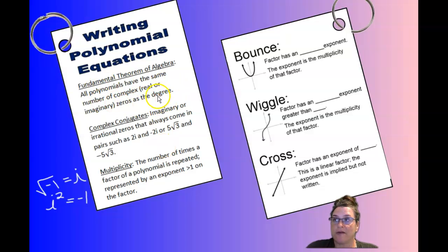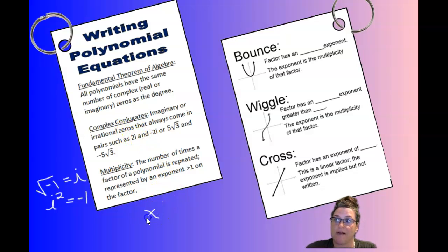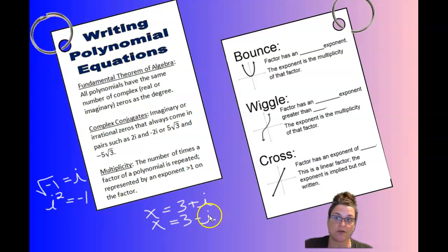Along with the Fundamental Theorem of Algebra comes the idea of complex conjugates. Imaginary numbers always come in complex conjugate pairs. So if you have a zero of 2i, your polynomial has to also have a zero of negative 2i — they're a conjugate pair. If you have a zero of x equals 3 plus i, then you would also have to have its conjugate, which is 3 minus i. Imaginary numbers, when they're zeros, will always come in conjugate pairs. So do irrational zeros.